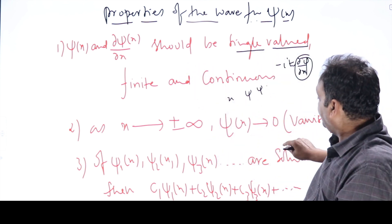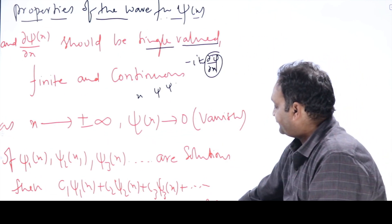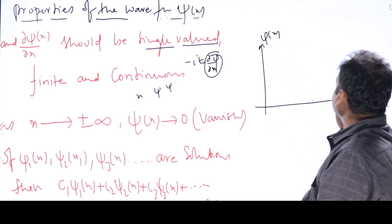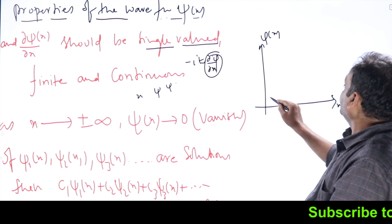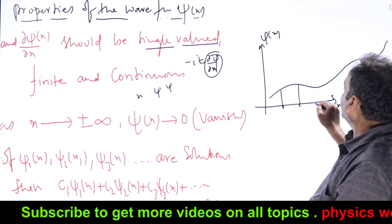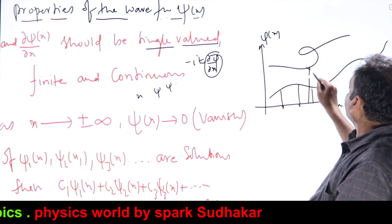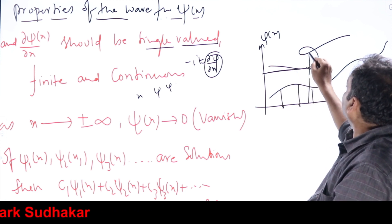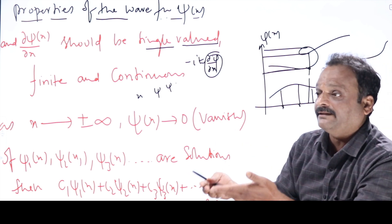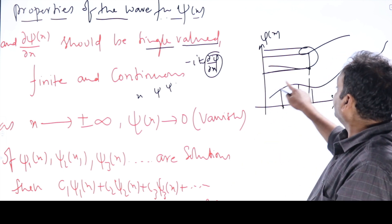Throughout the domain, psi should have only one value. If I draw a graph of psi(x) versus x, the function can be anything, but at each point it should have only one value — it cannot have two or three values like this. Three different values of psi at one point would give three different values for every physical parameter, which is meaningless.